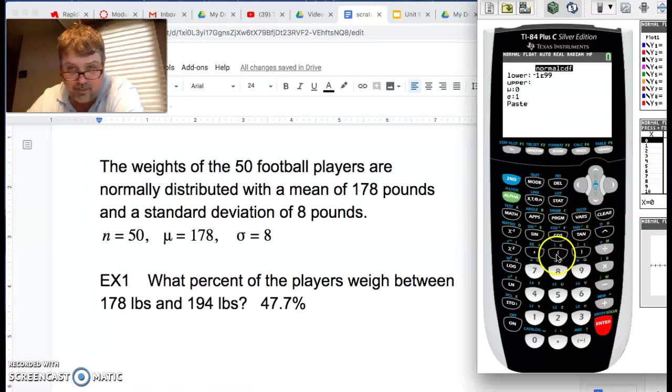Alright, now here's some language here that I need to talk about. I don't think that mu is very confusing, we know what the mean is, it's right here, we know what sigma is, it's right here, but this upper and lower bound stuff, I should talk about.